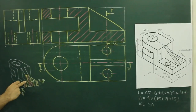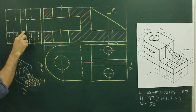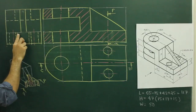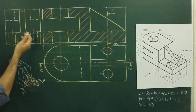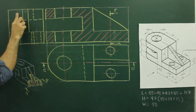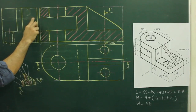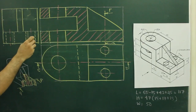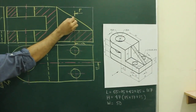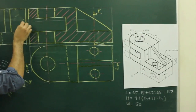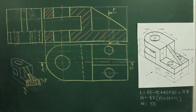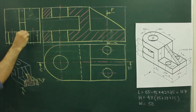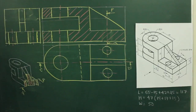For the side view, we will project from the front view. First we remove all the unnecessary dotted lines, like those dotted lines which are behind. This we need to remove, this we need to remove, plus this and this as well. After that, if you see the side view in the front view, you project from here. Wherever it will cut, that is dark. These two will become dark.